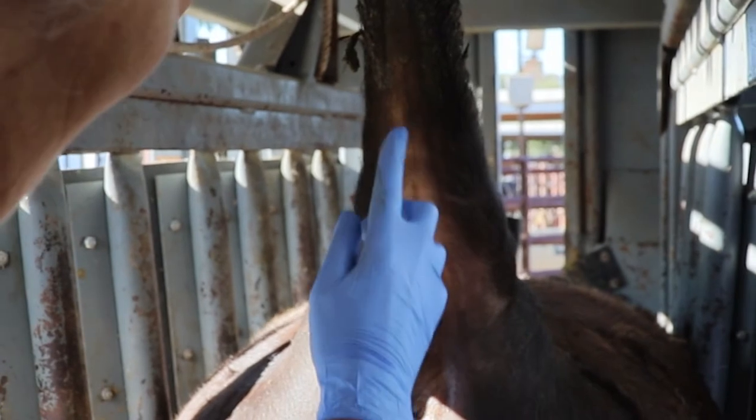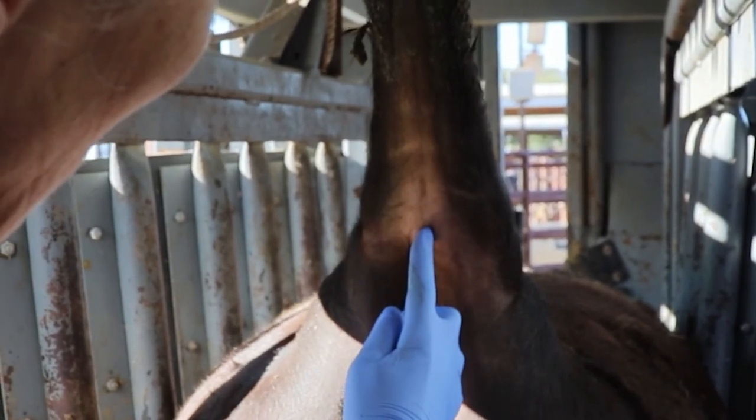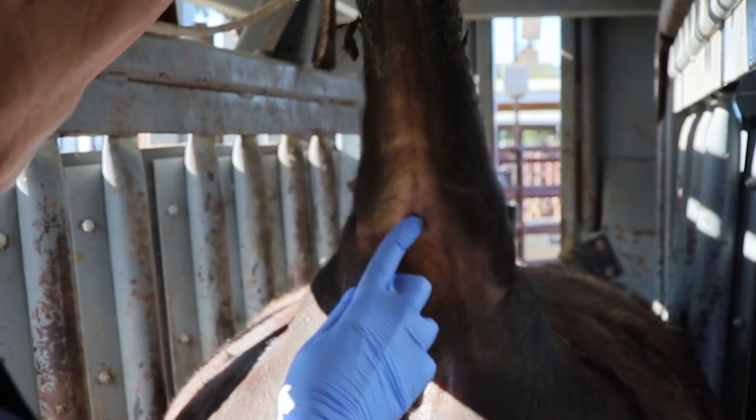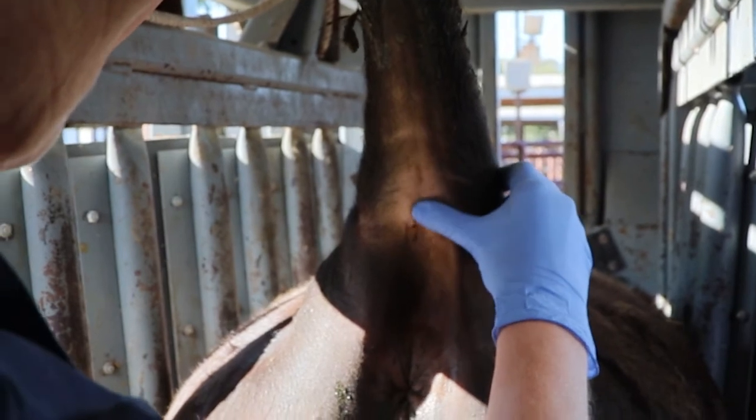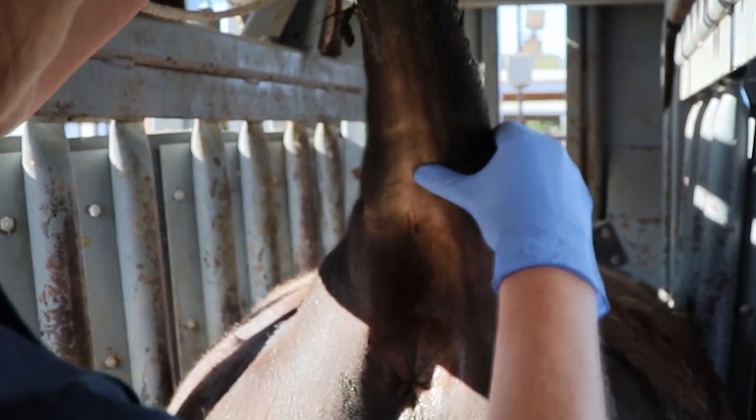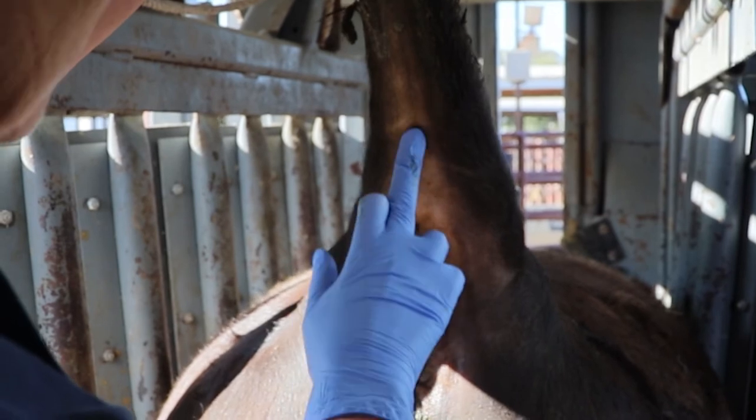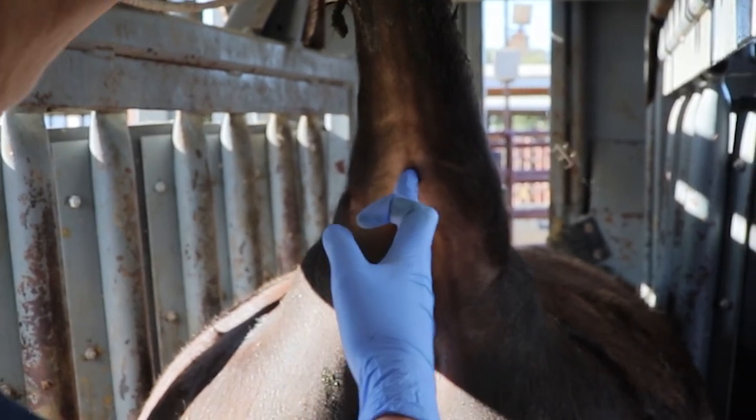There is a vein and artery that runs along the midline of the tail in this groove. There are vertebrae that you can feel and you want to avoid them with your needle. So this would be a good spot to go in.